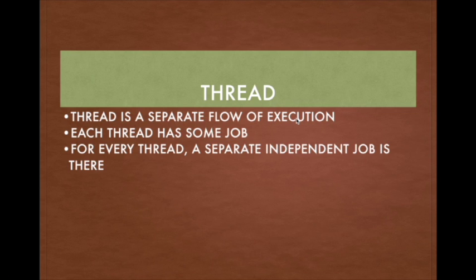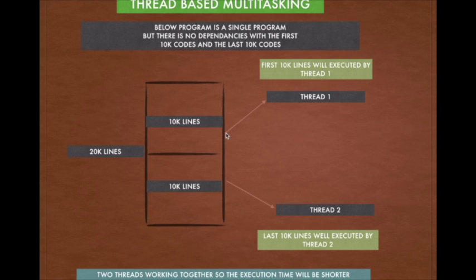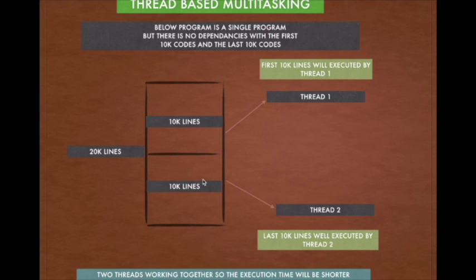We can say the thread is a separate flow of execution, and each thread has some job. Thread number one has a separate and independent job — its job is to execute the first 10,000 lines of code. Similarly, the job of thread number two is to execute the last 10,000 lines of code.